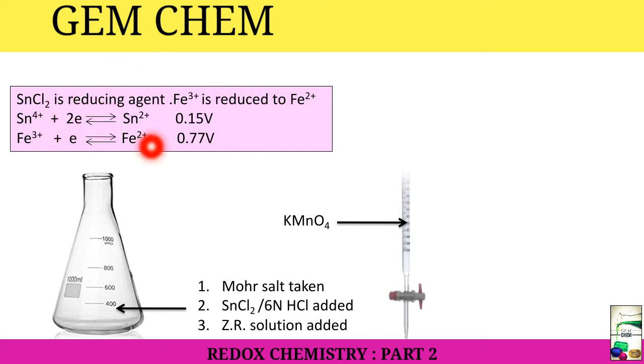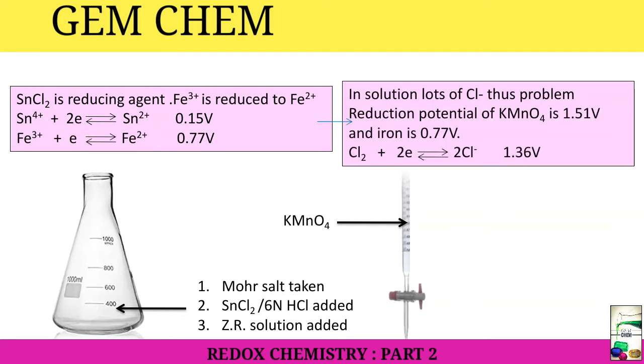SnCl2 is a reducing agent. In Mohr salt, though it is primarily Fe²⁺, there may be some Fe³⁺, so it needs to be reduced to Fe²⁺, so we add SnCl2 for complete conversion. Now what happens in solution is lots of Cl⁻ comes due to HCl and SnCl2. The reduction potential of KMnO4 is 1.51 volt, iron is 0.77 volt, and this one is 1.36 volt. So both Cl⁻ as well as the Fe²⁺ gets converted, and thus we have to quantify the combined results for oxidation of Cl⁻ and Fe²⁺, but we don't want it.